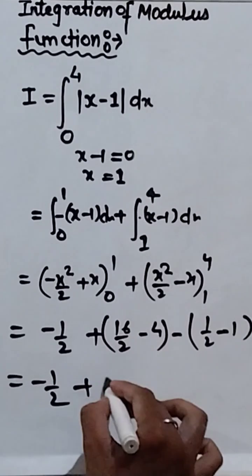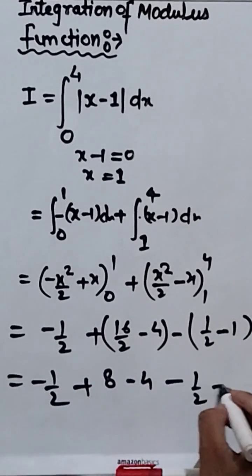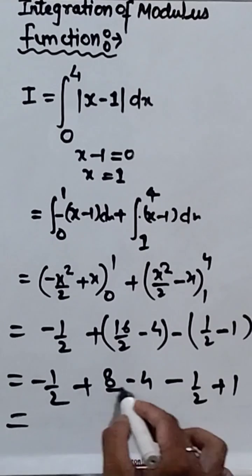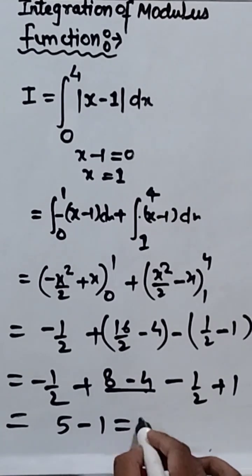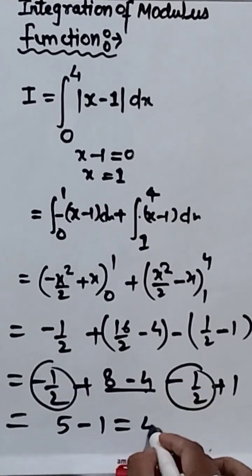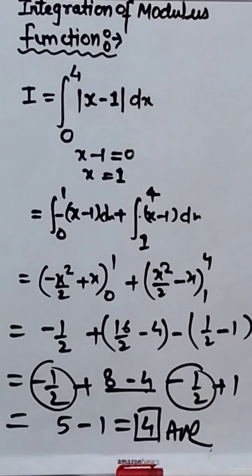First of all, simplify this. Minus half plus 1. So, 8 minus 4, 4 plus 1, 5 minus 1. This will be minus 1. So, we get 4 and that will be the final answer.